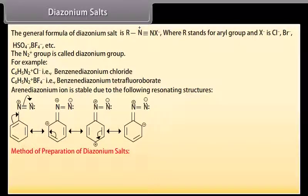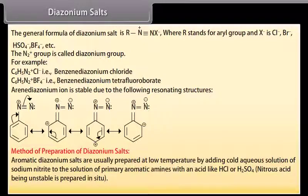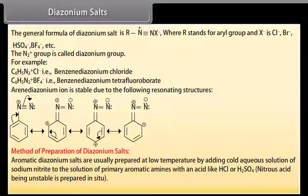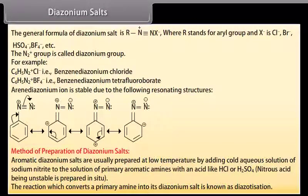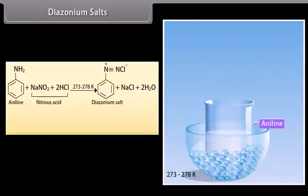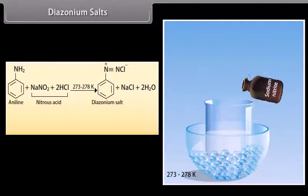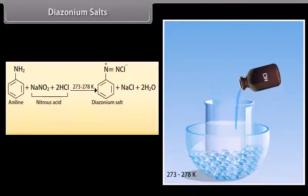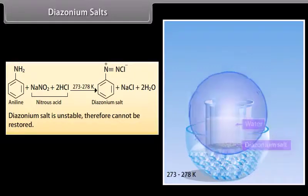Method of preparation of diazonium salts: Aromatic diazonium salts are usually prepared at low temperature by adding a cold aqueous solution of sodium nitrite to a solution of a primary aromatic amine with an acid like hydrochloric acid or sulfuric acid, because nitrous acid being unstable is prepared in situ. The reaction which converts a primary amine into its diazonium salt is known as diazotization. Aniline reacts with cold aqueous sodium nitrite and hydrochloric acid at 273–278 K to produce diazonium salts. Diazonium salt is unstable and therefore cannot be stored.